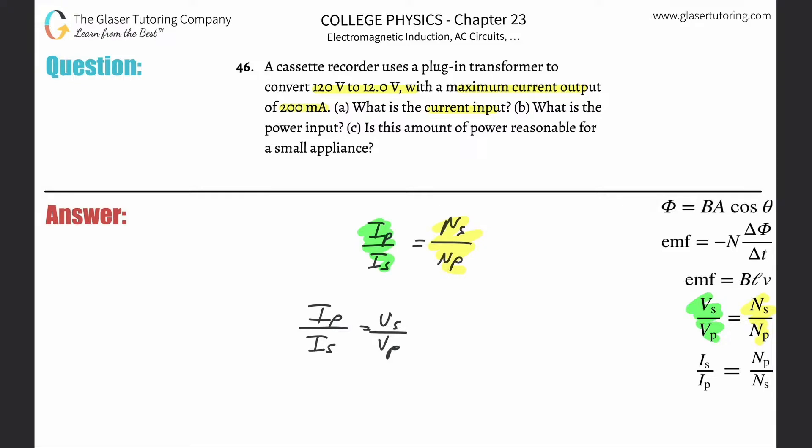So basically now what we need to do is what is the current input? Anytime they're talking about input, they mean primary. So we're looking for IP. All right. So the output here, they told us is 200 milliamps, but let's get that all in amps. And the reason why is just because I don't like to, we can technically plug in the milli, but I don't want to remember when I can or when I can't. I just remember that I need amps, right?